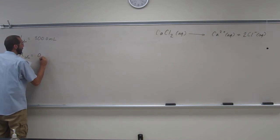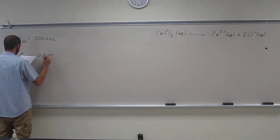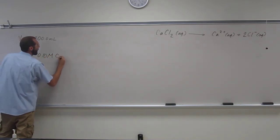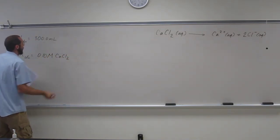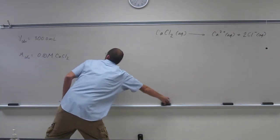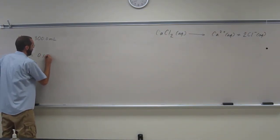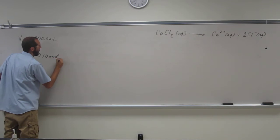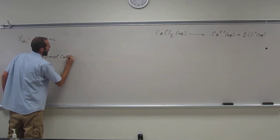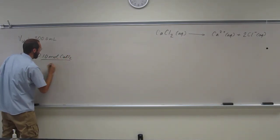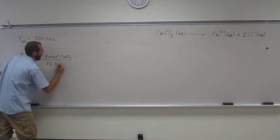It's 0.1 molar calcium chloride. So remember, molar is just another way of saying moles of calcium chloride per one liter of solution.